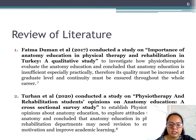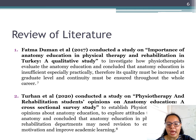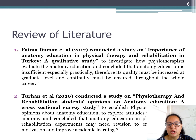Review of literature: Fatima Dumon et al. in 2017 conducted a study on the importance of anatomy education in physical therapy and rehabilitation in Turkey — a qualitative survey — and concluded that human anatomy education is insufficient, especially practically; therefore its quality must be increased at graduate level and continuity must be ensured throughout the whole career. Terhan et al. in 2020 conducted a study on physiotherapy and rehabilitation students' opinions on anatomy education — a cross-sectional survey — and concluded that anatomy education in physical therapy and rehabilitation departments may need revision to help and motivate students for academic learning.